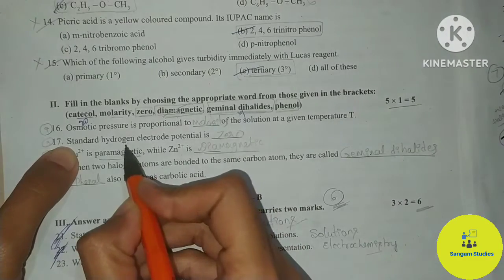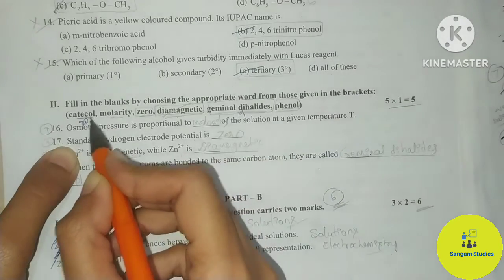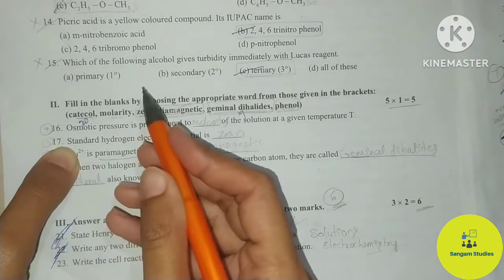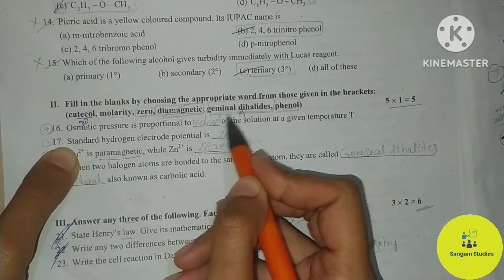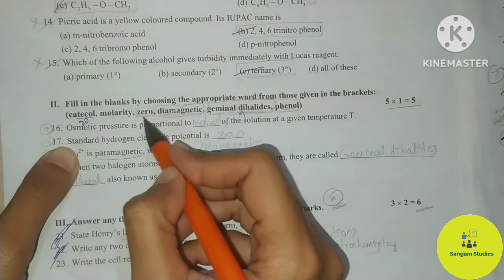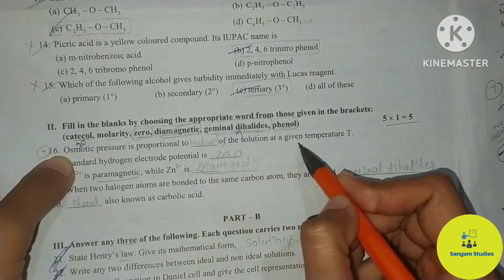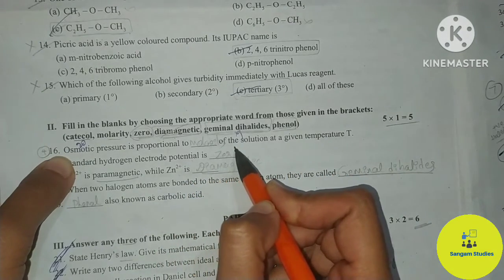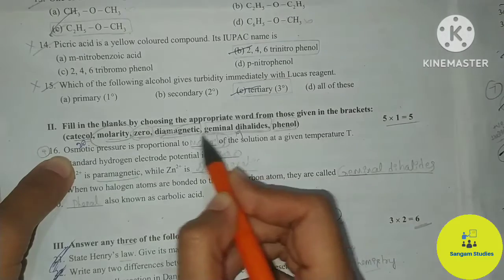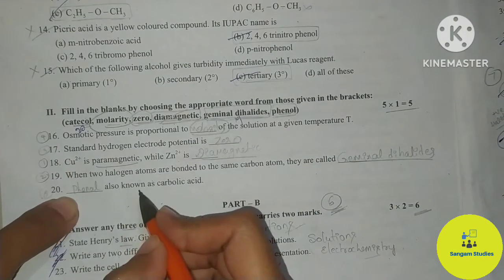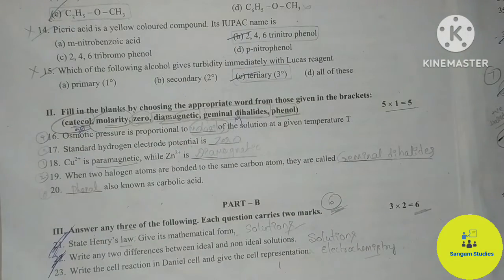Next question: the standard hydrogen electrode potential is dash — you can fill that in from the first chapter, electrochemistry. Next question: osmotic pressure is proportional to the dash of the solution at a given temperature T — fill in the blank from the solutions chapter. Next question: dash is also known as carbolic acid — the answer is phenol, not catechol. Fill that in.